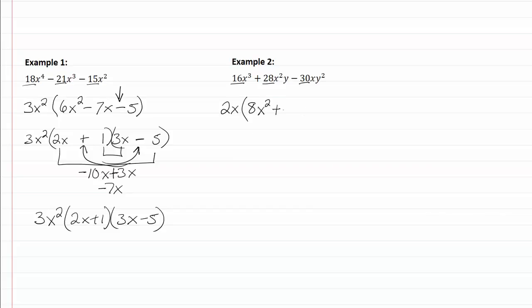28 divided by 2 will be 14. x² divided by x will give me x, and then I'll have the y. 30 divided by 2 will be 15. x divided by x is 1, leaving me with y².